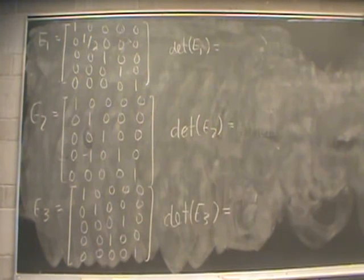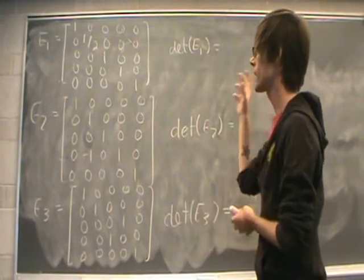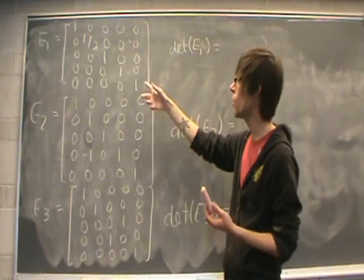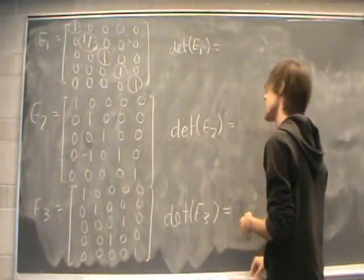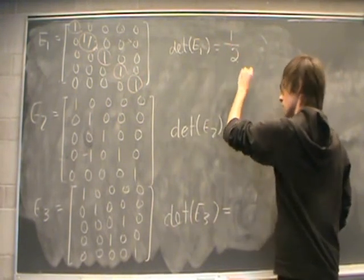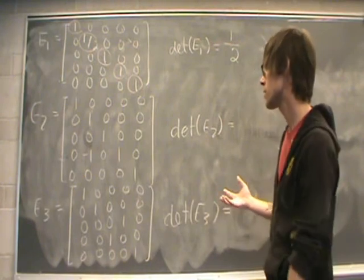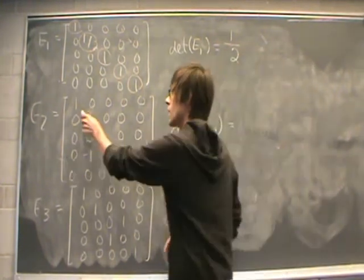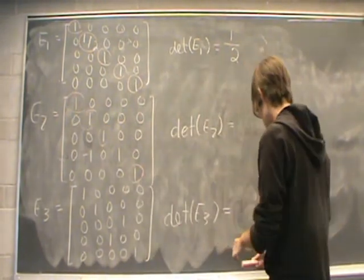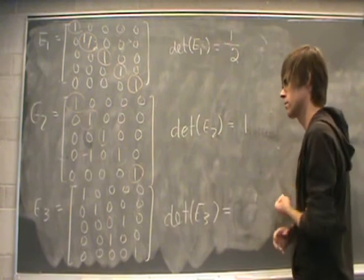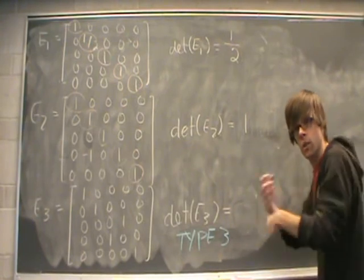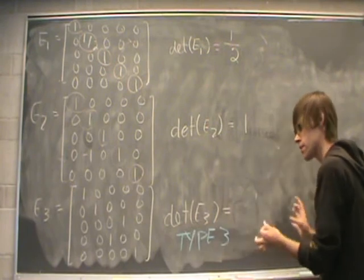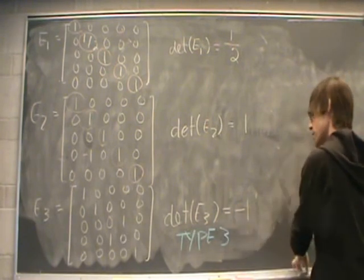Pause the video and copy down these three elementary matrices. Now we're going to calculate the determinant of these three elementary matrices. E1 is a diagonal matrix, so we multiply all of the entries on the main diagonal and get that the determinant of E1 is one-half. For E2, which is a lower triangular matrix, multiplying all entries on the main diagonal gives determinant of E2 equal to 1. E3 represents a type three elementary matrix — it was a switch of two rows, and we know that the determinant of these kinds of elementary matrices is equal to minus 1.